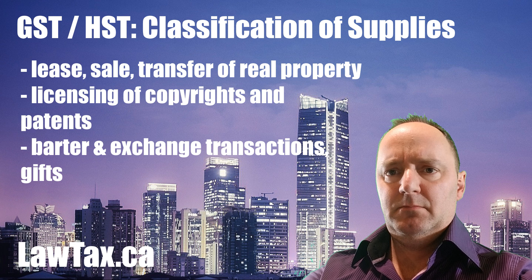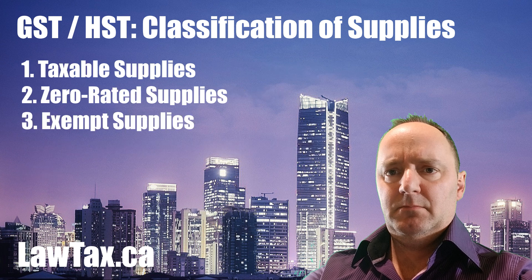Once it is determined that there is a supply, a further determination must be made as to the type of supply. Once again, there are three types of supplies for purposes of GST and HST: taxable, zero-rated, and exempt.